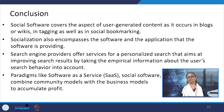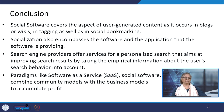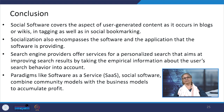We can see that social software covers the aspect of user-generated content as it occurs in blogs, wikis, tagging, and social bookmarking. Socialization also encompasses the software and the applications that the software provides. Search engine providers offer services for a personalized search that aims at improving search results by taking empirical information about user search behavior into account. Paradigms like SaaS and social software combine community models with business models to accumulate profit. The contemporary modes of artificial intelligence, like chatbots, are also an evolved form of social software.